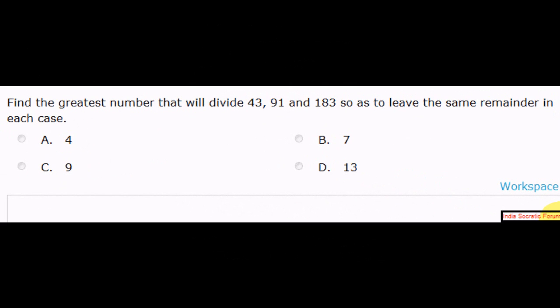Let's take some audio aptitude questions here. Question 1: Find the greatest number that will divide 43, 91, and 183. The second part, it leaves no remainder or it leaves the same remainder in each case. So it has to leave the same remainder in each case, and it has to be the greatest number. Here are the four options. Your time starts now.